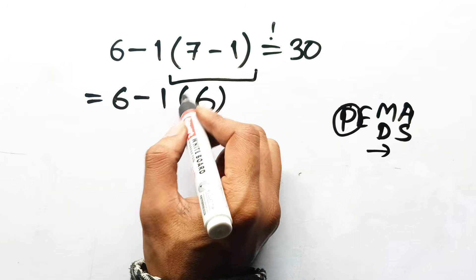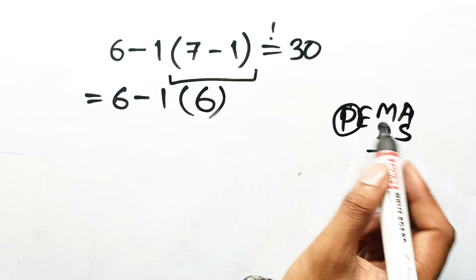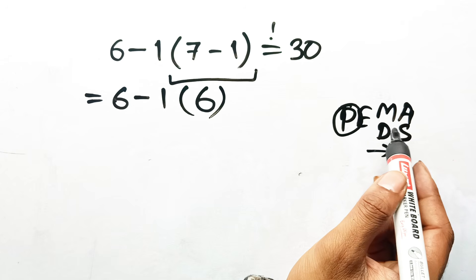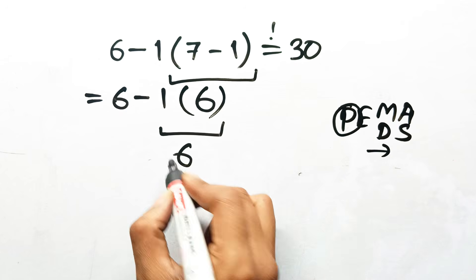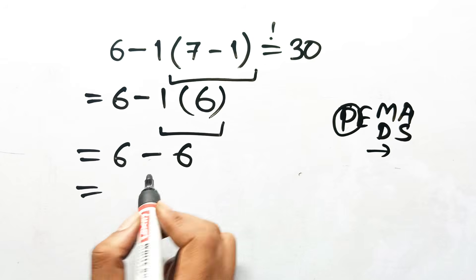Next, multiplication comes before subtraction. PEMDAS says multiplication or division first, 1 times 6 equals 6. Now, perform the subtraction. 6 minus 6 equals 0.